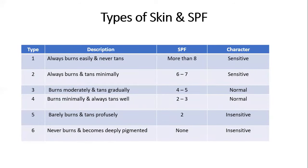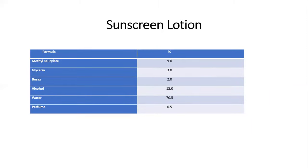Different skin types and their corresponding SPF recommendations: Type 1 — always burns easily and never tans — requires SPF greater than 8. Type 2 — sensitive, always burns and tans minimally — SPF 6 to 7. Type 3 — burns moderately and tans gradually — SPF 4 to 5. Type 4 — normal, burns minimally and always tans well — SPF 2 to 3. Type 5 — barely burns and tans profusely — SPF 2. Type 6 — never burns and becomes deeply pigmented — no SPF required, insensitive.